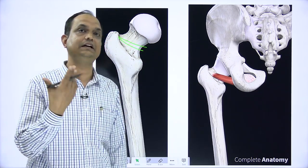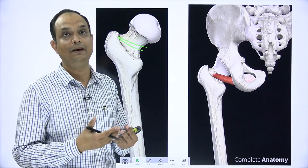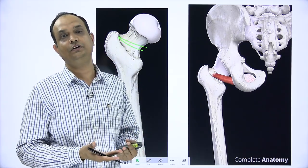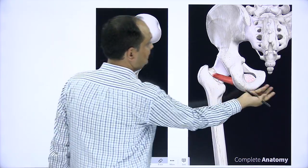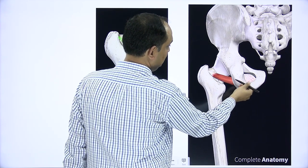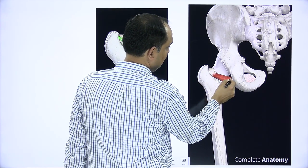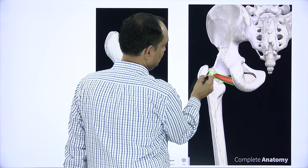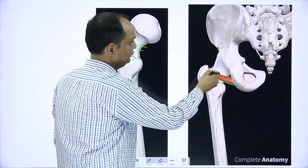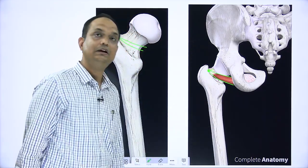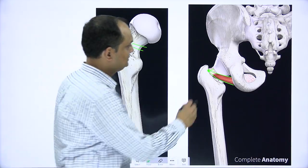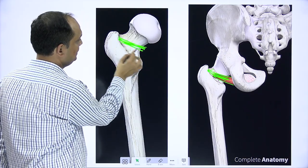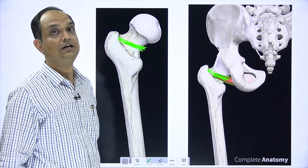Obturator externus arises from the external surface of the obturator membrane — from the anterior aspect of the obturator margins of the foramen. It then goes laterally, comes around the posterior side of the neck of femur creating a shallow groove, and ultimately inserts into the trochanteric fossa on the inner side of the greater trochanter.